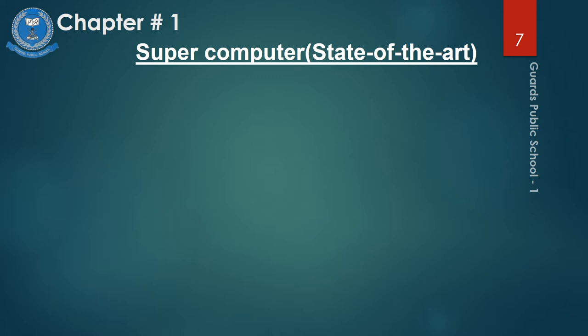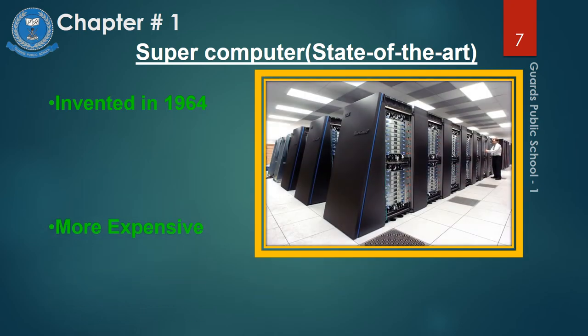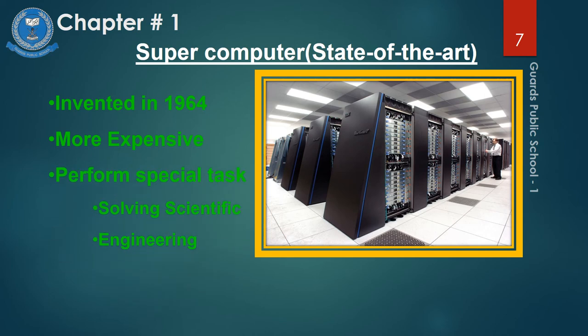Now in this slide we discuss about supercomputer. You can see in the bracket 'state of the art', meaning these devices have the very newest and most advanced features. Supercomputers are made up of thousands or hundreds of computers, each with its own CPU. Supercomputers work on a single problem at a time, unlike mainframe computers which can support many problems and users at a time.